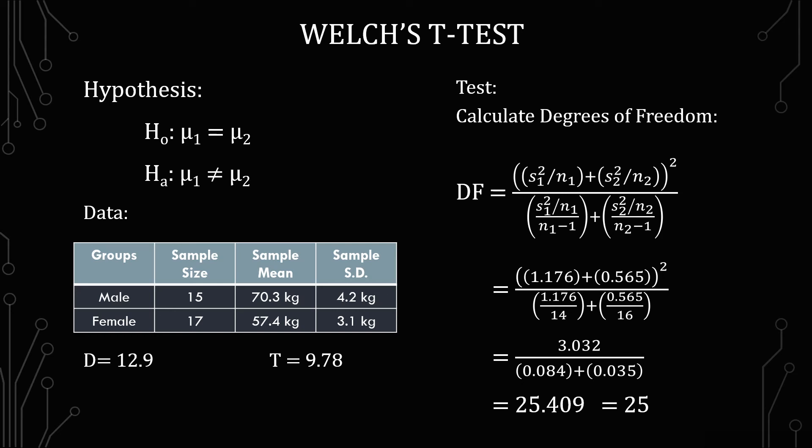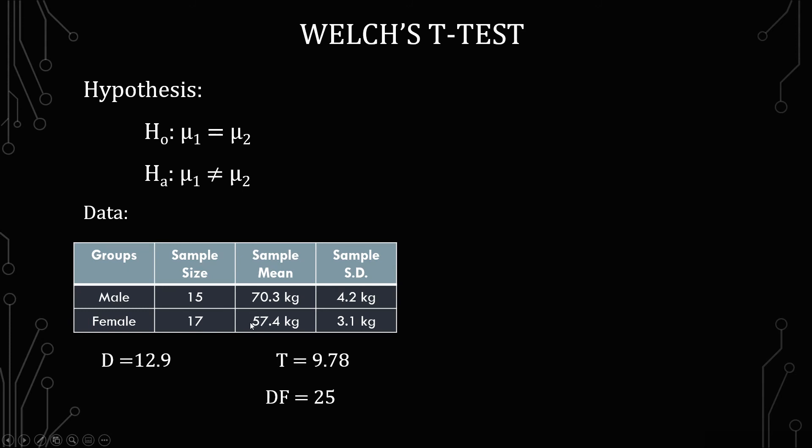And just like before we have the information here with the degrees of freedom. And that's important because we're going right into checking the t-table for the 95% critical value. And so we know that it's going to be a two-sided test because of the hypothesis.